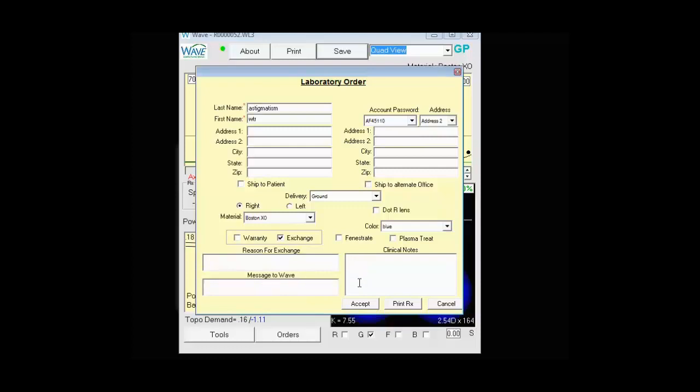And if you have any clinical notes, this is for your own reference. So if you've edited a lens, altered it, and you want to just keep note of what you're doing, that's what this box is for. You can hit Accept. Print Rx will allow you to give a printout to your patient so they can keep a record for their contact lenses. And then Cancel.